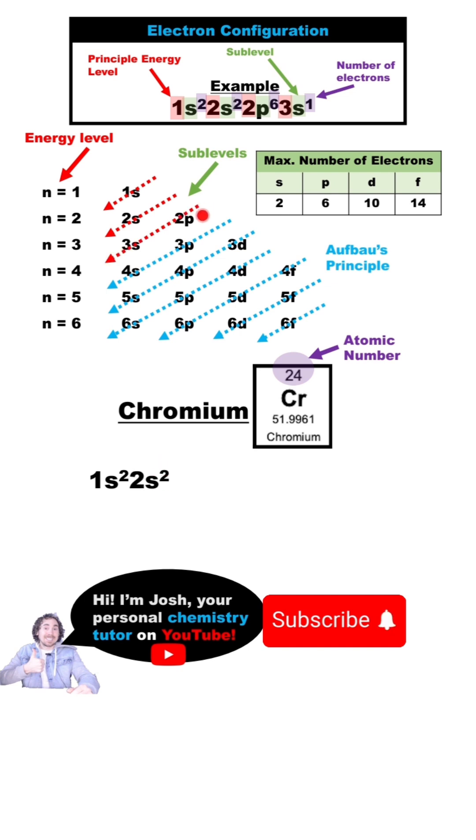Now we need to move to the next sublevel which is the 2p. A p sublevel can hold a maximum of 6 electrons, so we'll put 6 electrons there. Now we'll move up to the 3s, which can hold 2 electrons just like the other s sublevels, and the next 6 electrons will go into the 3p, which can hold a maximum of 6 electrons just like the other p sublevel.